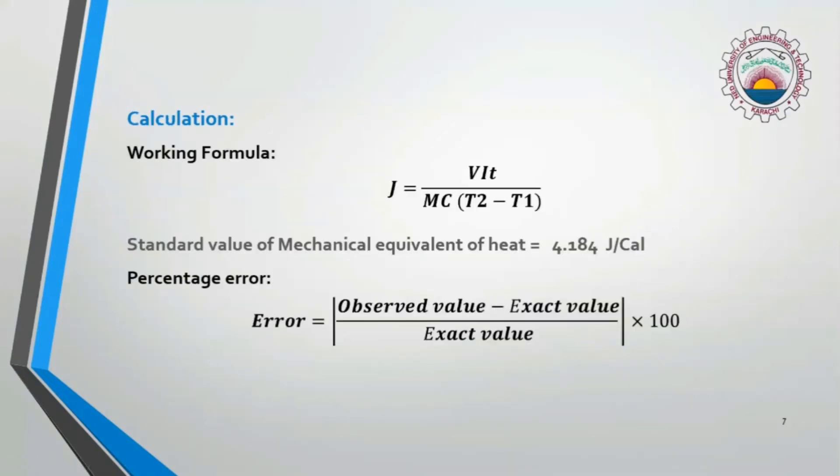This is the working formula of mechanical equivalent of heat or the Joules constant. J is equal to VIt upon MC times T2 minus T1. The standard value of J is 4.184 Joules per calorie. With the help of the standard value, we can find out the percentage error in all observed values.